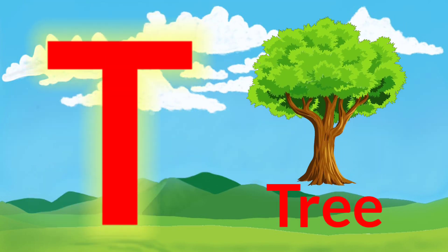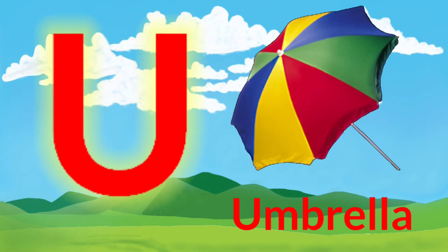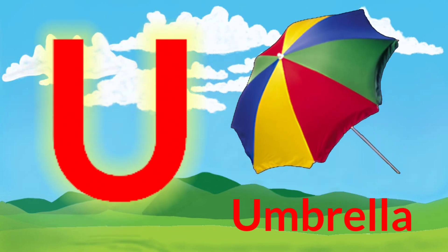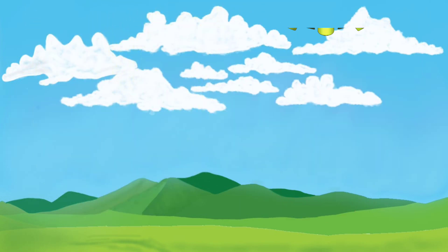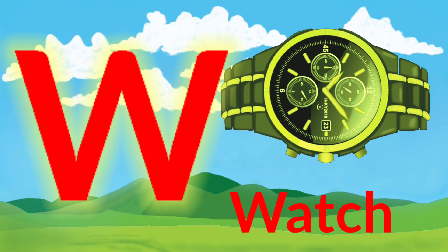T for tree. U for umbrella. V for van. W for watch.